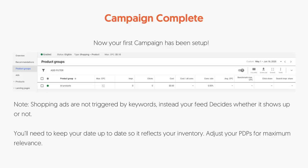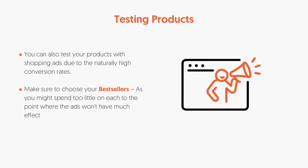At this point you'll start seeing some sales roll in. It may take a bit because you're not spending much, but over time your numbers will increase. You can start adjusting your spend per click. You also want to start testing products — test your best products with shopping ads since they're naturally higher in conversion rates. Choose your best sellers; products that haven't performed well on your e-commerce site probably won't convert as well through ads either.